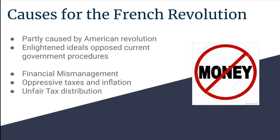Moving on, we have the causes of the French Revolution. First are some long-term causes. A long-term cause was the American Revolution, because after France had spent massive amounts of money to aid the Americans in their revolution against the British, they had been sent into massive debt. Additionally, post-Enlightenment ideals lingered and they opposed the current government procedures.